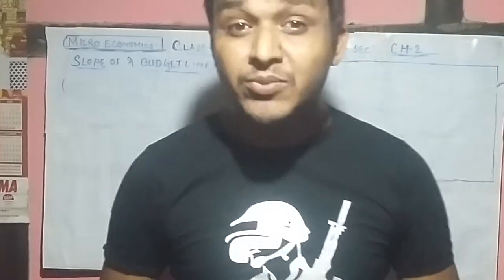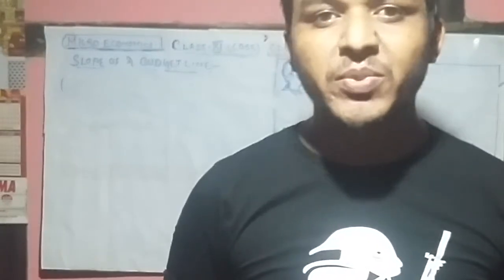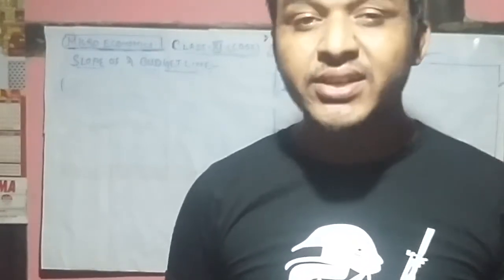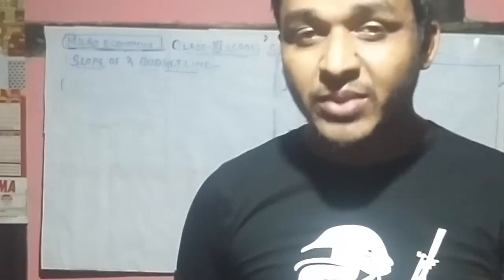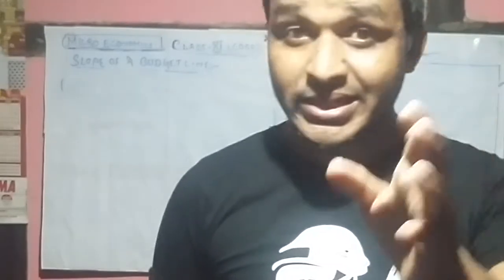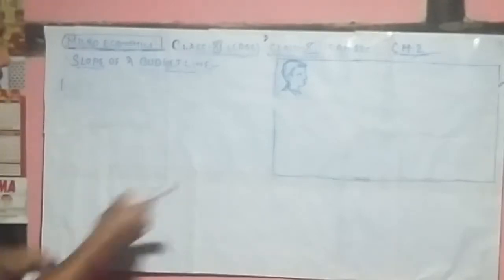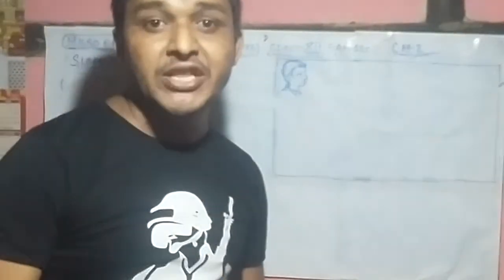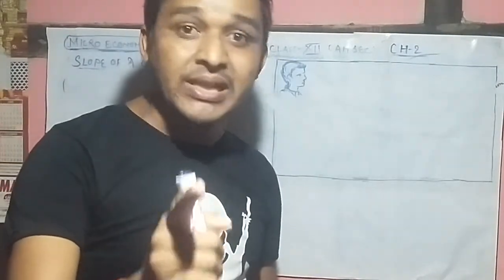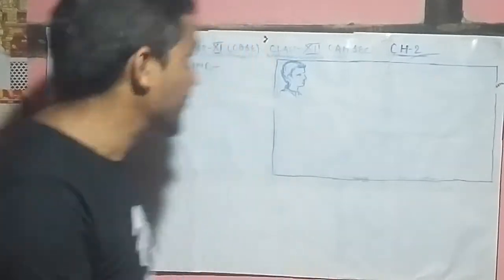Hello students and welcome to my channel Economics and Queries. Today I am going to start one of the most important topics of microeconomics — that is the slope of a budget line. You have to go to Chapter 2, that is Consumer Equilibrium. So let us start. First we will take the definition, then we will take an example, and at last we will derive it mathematically.